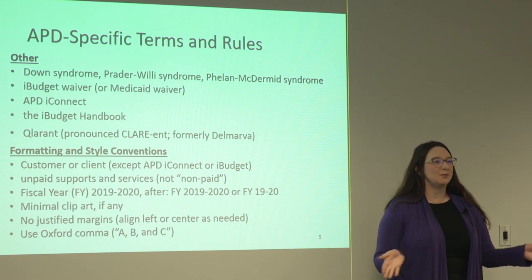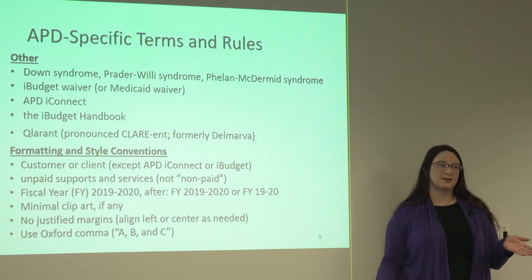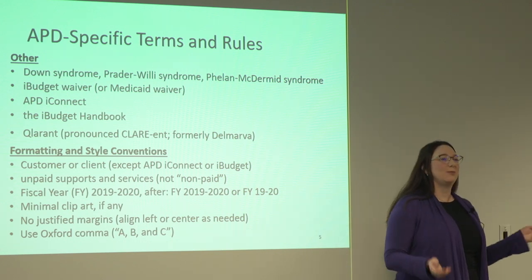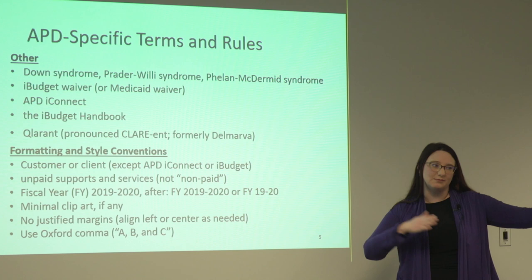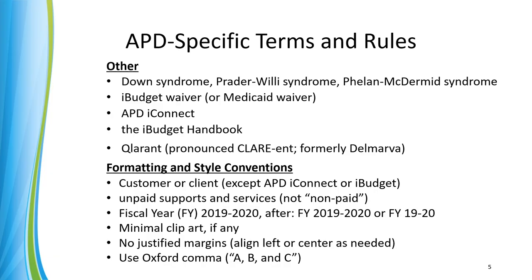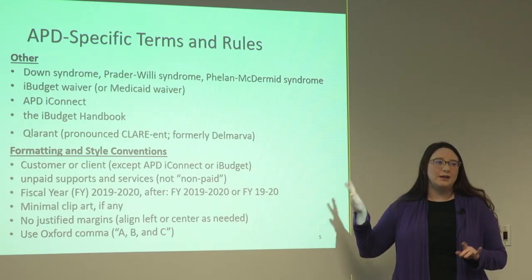APD iConnect — for trademark reasons, APD always has to be in front of iConnect. I learned that a couple months ago; it's definitely an emerging thing that people still haven't heard. The iBudget Handbook, we capitalize the H — there's also the super long official name, but that's also capitalized. Clarent — pretty much everybody knows Clarent used to be Delmarva. It's capitalized and pronounced Clarent. Any questions on that?